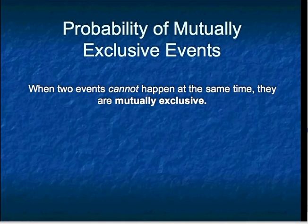First, we're going to start with an example of probability of mutually exclusive events, which is what happens when two selections or events cannot happen at the same time. They're said to be mutually exclusive.